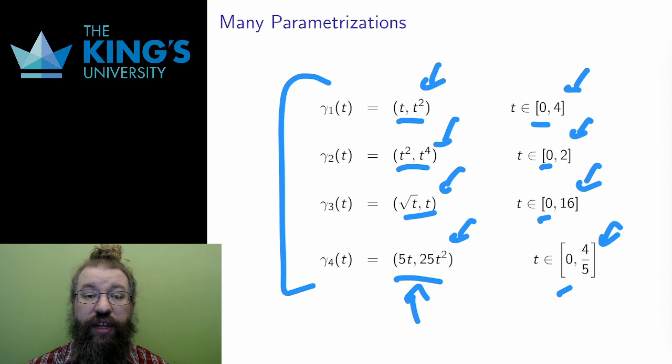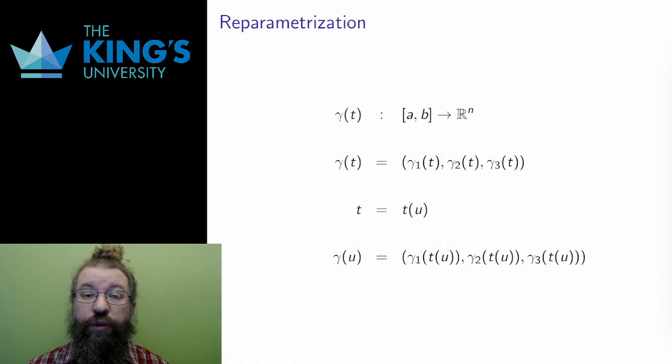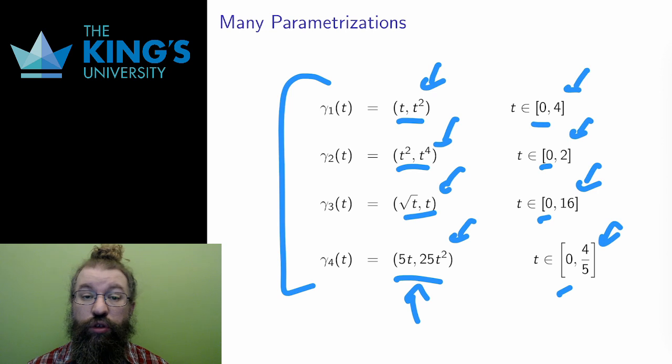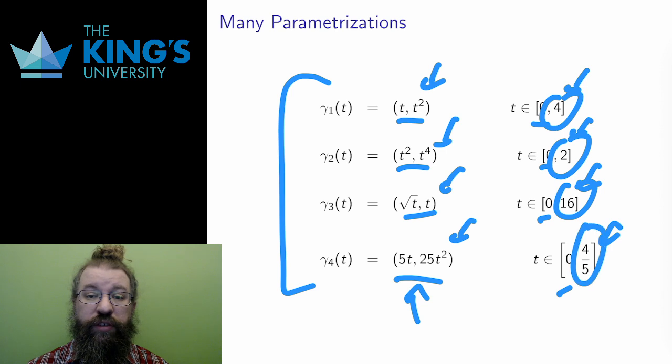If t is measured in seconds, then the first takes 4 seconds to trace the shape, the second 2 seconds, the third 16 seconds, and the fourth only 4 fifths of a second.